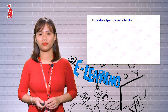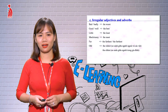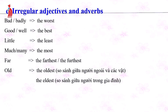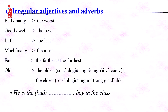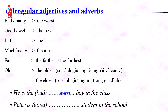For irregular adjectives and adverbs in superlative: bad/badly → the worst; good/well → the best; little → the least; much/many → the most; far → the farthest or the furthest; old → the oldest or the eldest. For example: 'He is the worst boy in the class' or 'Peter is the best student in the school.'